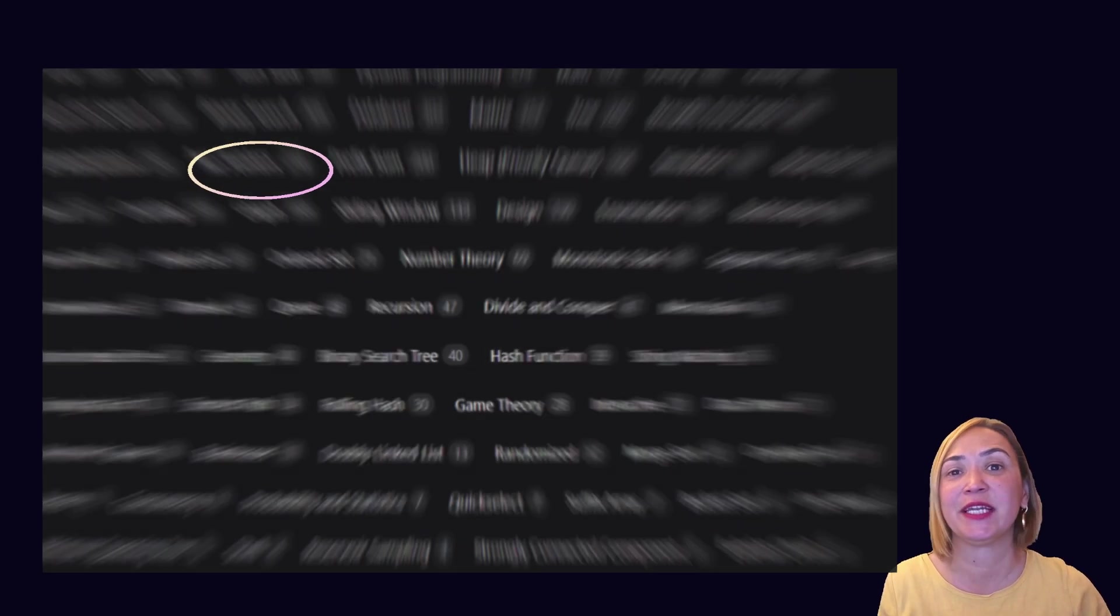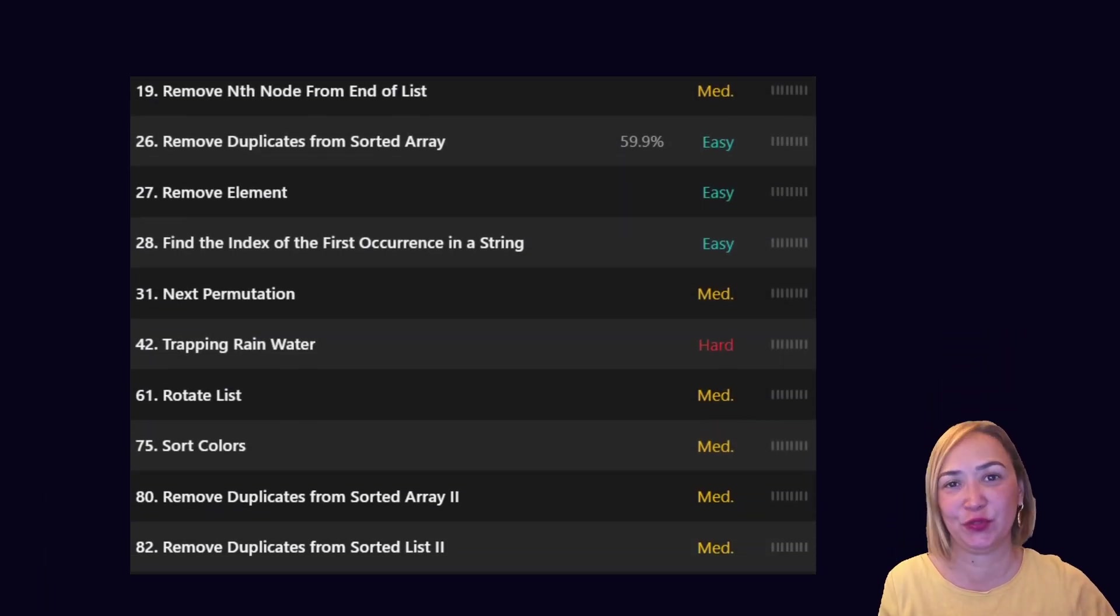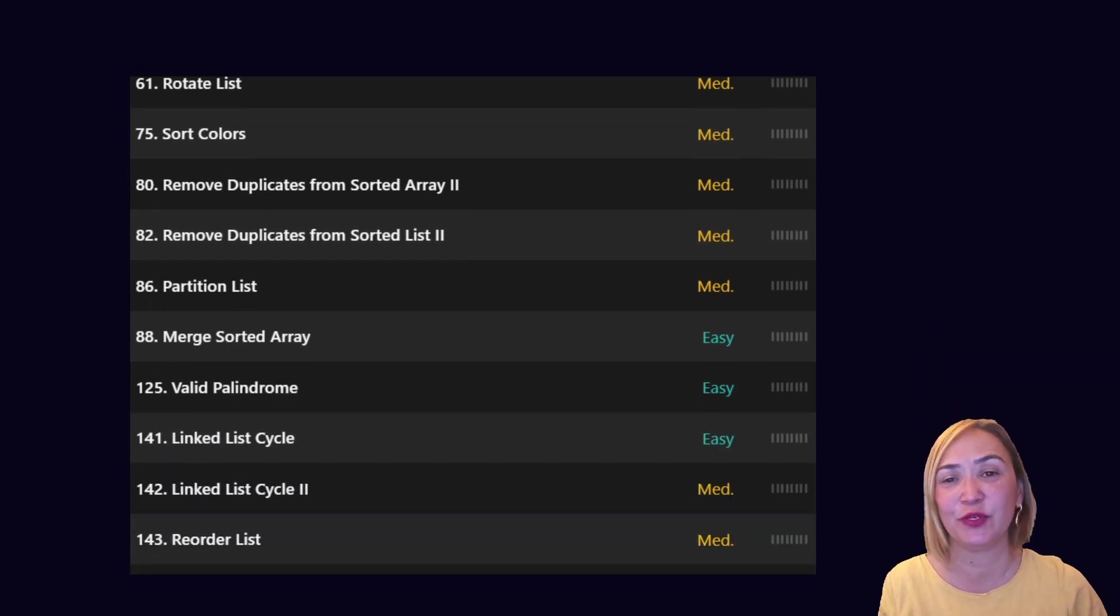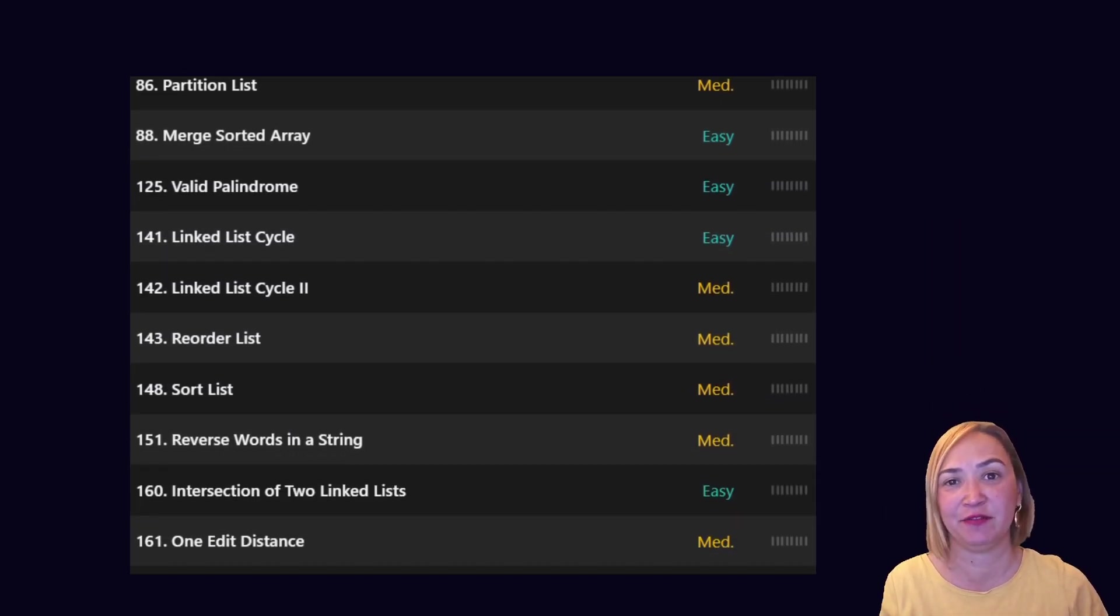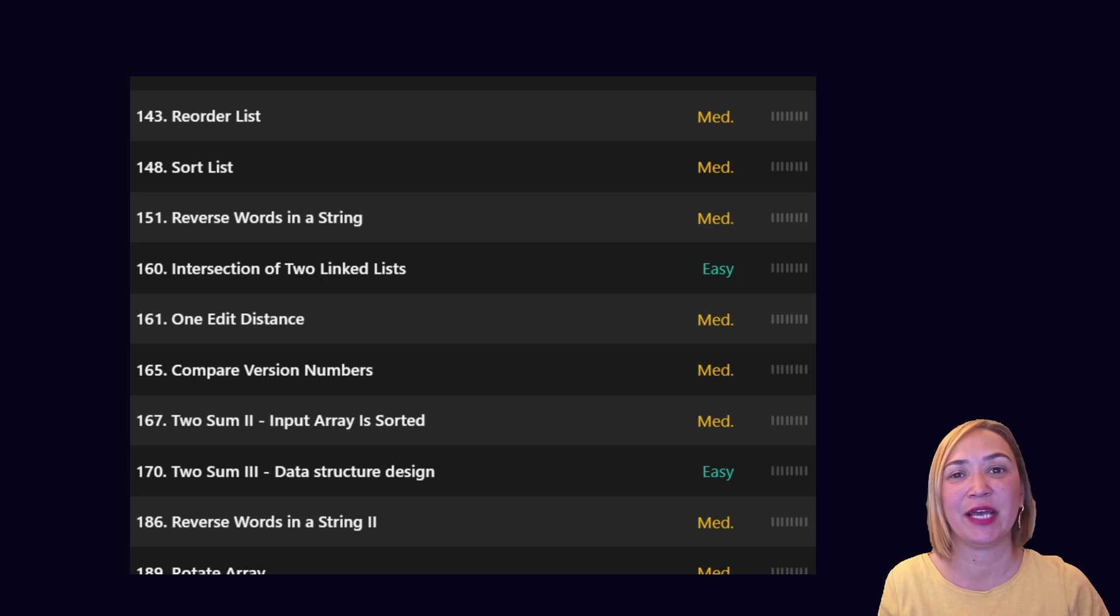You've seen it in reverse array, in palindromes, even in sorted arrays. But why is the two-pointer technique everywhere in interviews? Let's break it down visually and clearly.